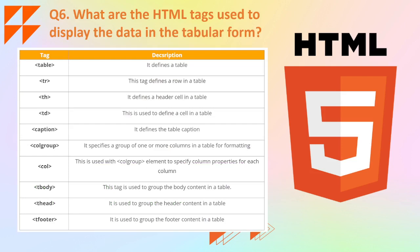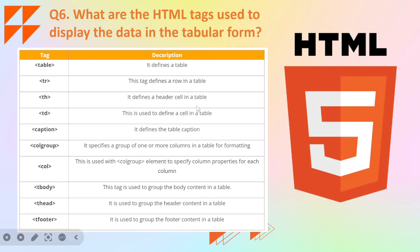The next question is: what are the HTML tags used to display data in tabular form? The tags are: table — defines a table; tr — defines a row in a table; th — defines a header cell; td — defines a cell in a table; caption — defines the table caption; colgroup — defines a group of one or more columns for formatting; col — specifies column properties for each column; tbody — groups body content; thead — groups header content; and tfoot — groups footer content in a table.